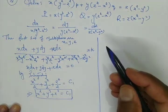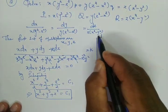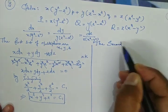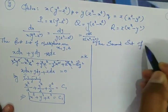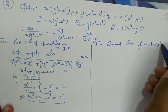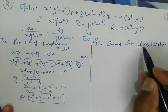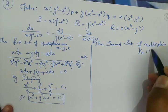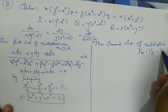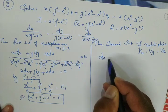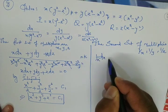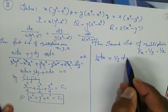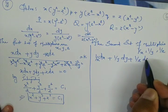Now we select the second set of multipliers. The second set of multipliers is 1/x, 1/y, and 1/z. We multiply the numerator and denominator accordingly: (1/x)dx + (1/y)dy + (1/z)dz over the corresponding denominator expression.